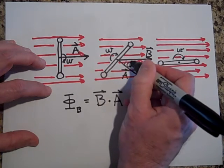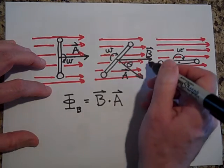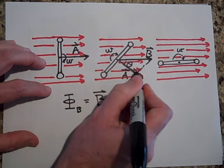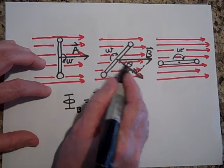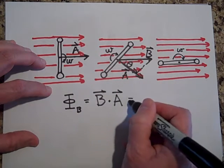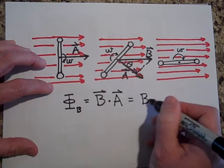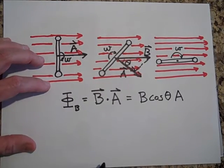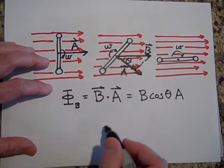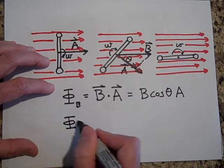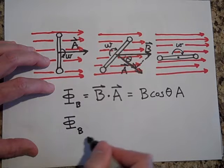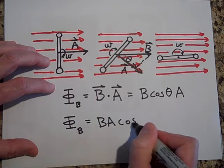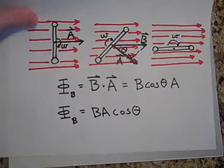But if this is theta, if that angle is theta, then if I only want the part of B that's in the direction of A, that might be this part. And that part, to get this component of B, that is B cosine of theta. So that's going to be B cosine of theta times A. That gives me the same thing. It's the theta that's changing.